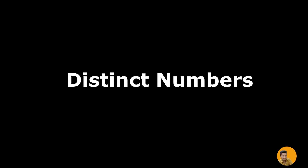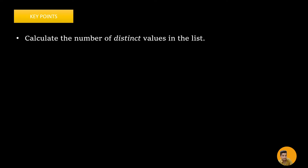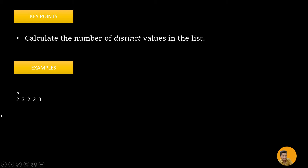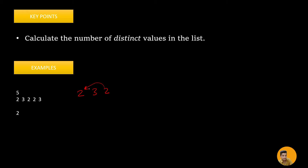Let us look at the problem 'Distinct Numbers.' We will be given a list and we need to calculate the number of distinct values in the list. For example, if the list is of size 5, we have two distinct numbers: 2 and 3. The other occurrences of 2 and 3 are repeated, so we clearly have these two numbers as distinct or unique numbers in the given list.